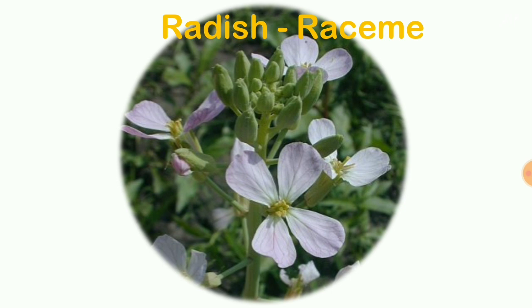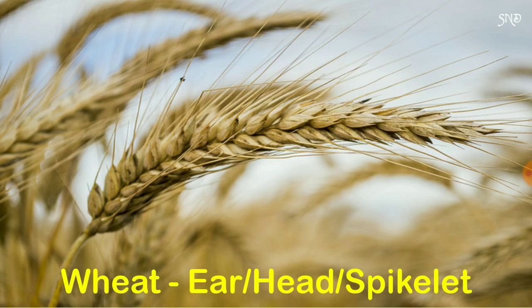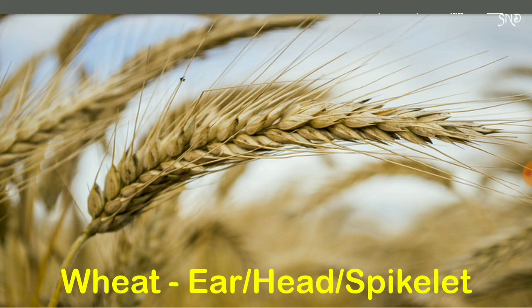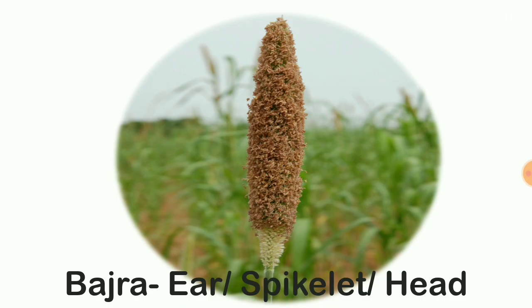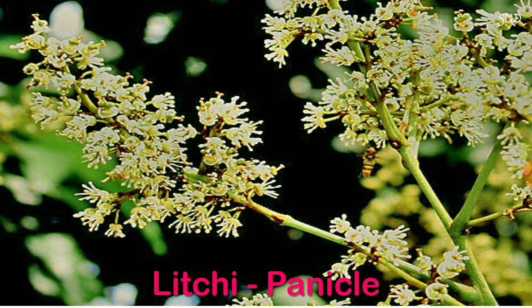In radish, the inflorescence is raceme. In rice, it is panicle. The inflorescence of wheat is earhead or spikelet. In bajra, it is earhead, spikelet, or head. In cauliflower, the inflorescence is compound corymb. In lychee, the inflorescence is panicle.